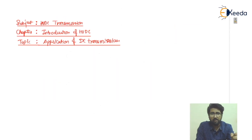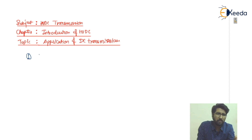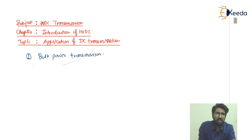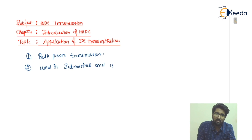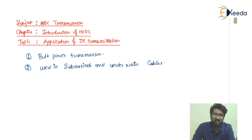If I talk about the applications related with DC transmission, I can list four major points. The first one is bulk power transmission. The second point is that DC transmission is used in submarines and underwater cables.